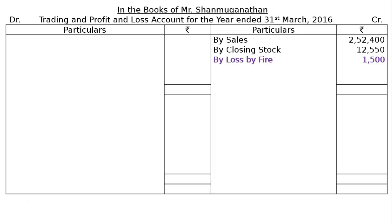Regarding loss by fire — goods of value Rs. 1,500 were destroyed by fire and the insurance company admitted a claim of Rs. 1,000. The loss by fire of Rs. 1,500 is shown on the credit side of the Trading Account and also on the debit side of the Profit and Loss Account. The insurance claim admitted of Rs. 1,000 is shown on the credit side of the P&L Account. This item appears in four places total, though it can be condensed to two.